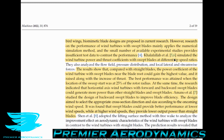Research indicated that horizontal axis wind turbines with forward and backward swept blades could generate more power than straight blades. Horizontal axis wind turbines are the quintessential wind turbine — the ones you'd imagine on a farm on a ridge somewhere. Amano and other researchers studied backwards swept blades to improve blade efficiency, selecting appropriate cross-sectional direction and size according to oncoming wind speed. It was found that swept blades could provide better performance at lower wind speeds, while at higher wind speeds they provided lower output power than straight blades.